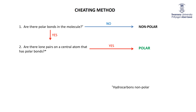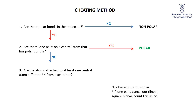If there are lone pairs on the central atom, the molecule is polar. There is a caveat for higher-level VSEPR: linear molecules with five or six electron groups, or square planar molecules with six electron groups, are exceptions where lone pairs cancel. If there are no lone pairs on the central atom, ask: are the attached atoms of different electronegativities from each other? If yes, it's polar; if no, it's non-polar.